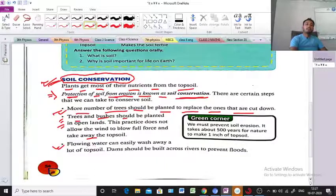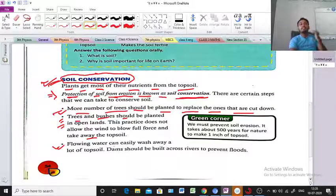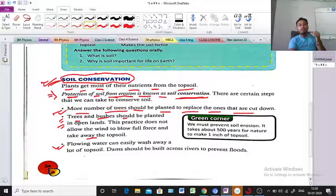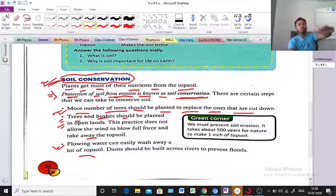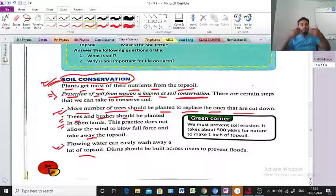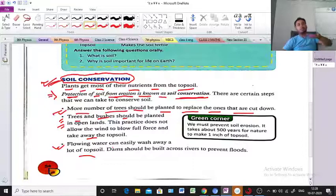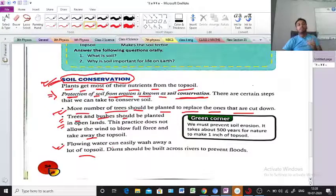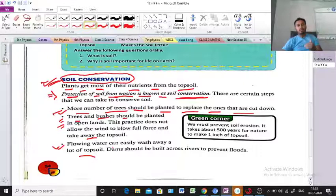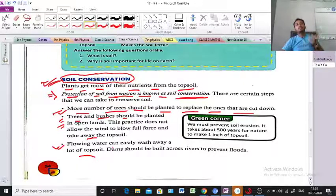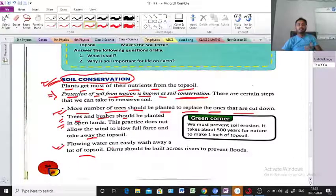Flowing of water can easily wash away a lot of topsoil. If water flows over fertile land, the fertile part will be destroyed. So dam should be built across the river to prevent the floods. We have to build some dams to prevent floods and control erosion.